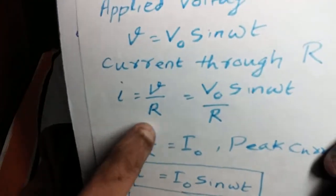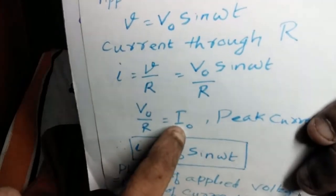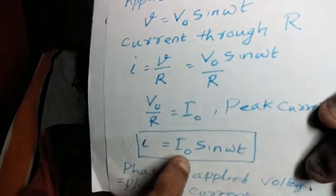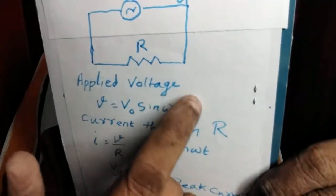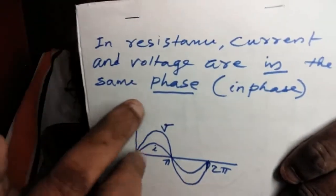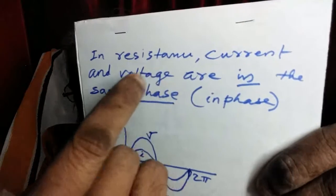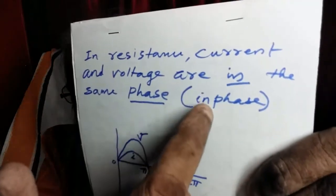V₀ by R is the maximum voltage divided by resistance — that should represent the maximum current in the resistance. Let it be I₀. Then I equals I₀ sine omega T. So the phase of the current is omega T. The phase of the applied voltage is also omega T, which means the voltage and current are in the same phase — in phase. You can write it in short form as "in phase".